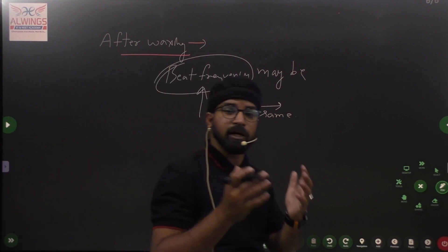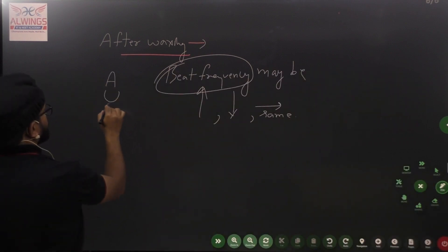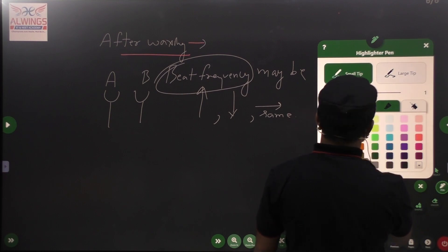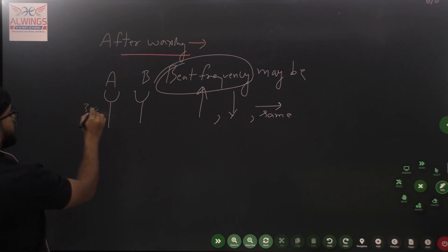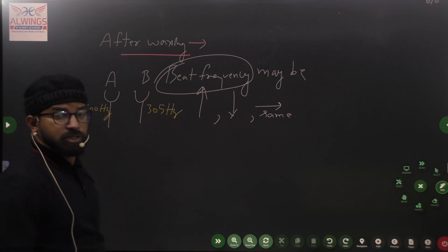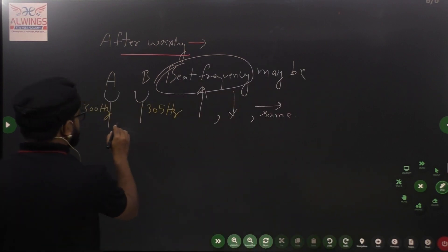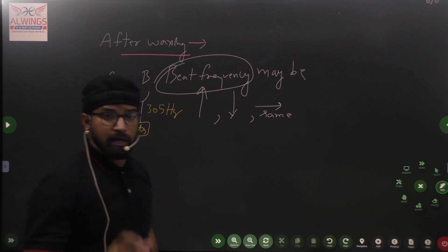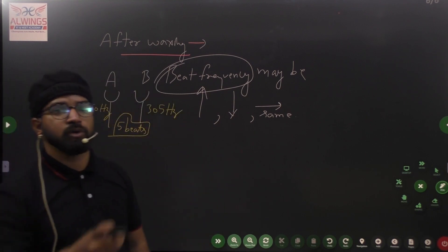Beat frequency after waxing may be increased, decreased, or stay the same. Suppose there are two tuning forks A and B. Suppose the frequency of A is 300 Hz and frequency of B is 305 Hz. If we sound them together, then 5 beats will be formed. We humans can hear a maximum of 10 beats per second. A beat means louder sound and then zero sound alternating.